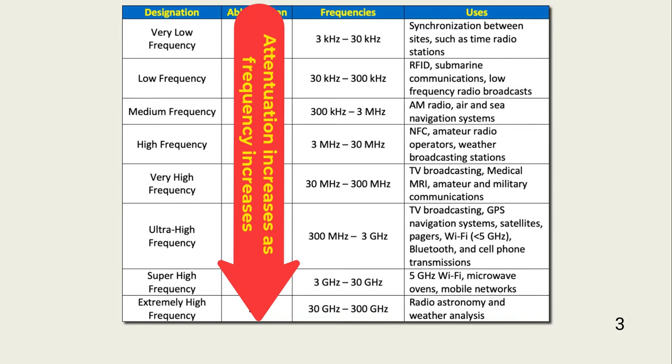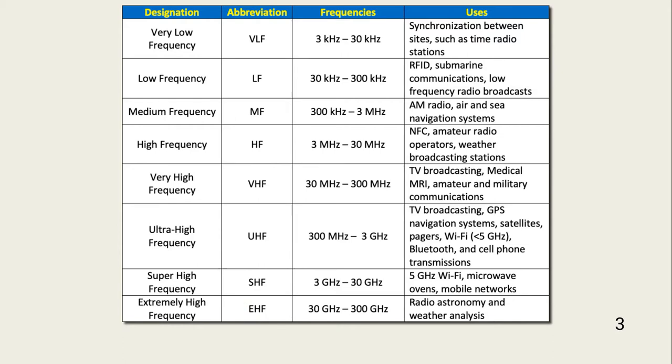For example, organizations that move from 2.4 gigahertz Wi-Fi to 5 gigahertz Wi-Fi usually need a coverage assessment to adjust placement of existing or new access points.